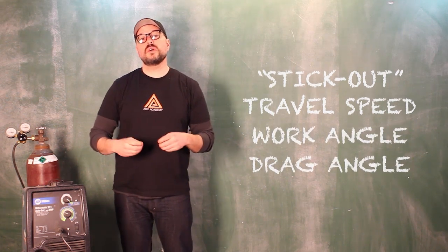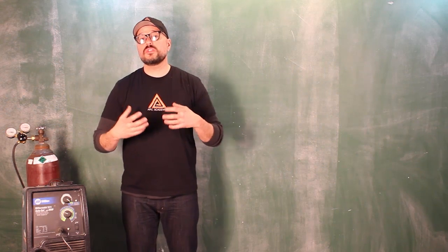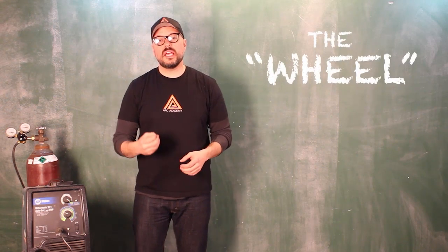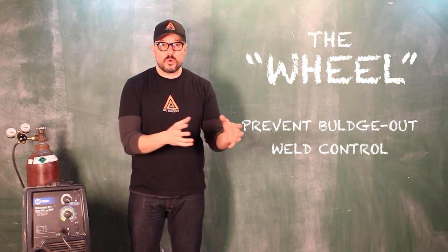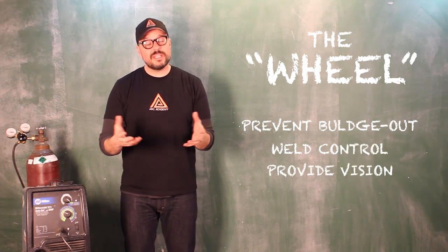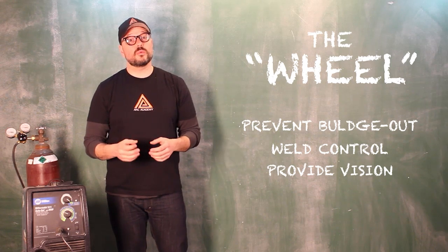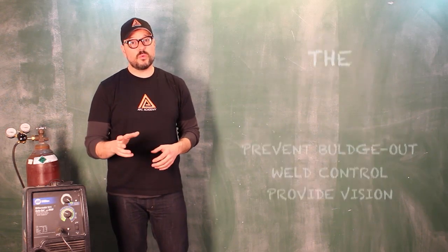We are going to get into a technique that I like to refer to as the wheel. That's going to help prevent bulge out. It's going to help you control your weld going through the weld. It gives you vision. It's also going to make your weld look really nice.